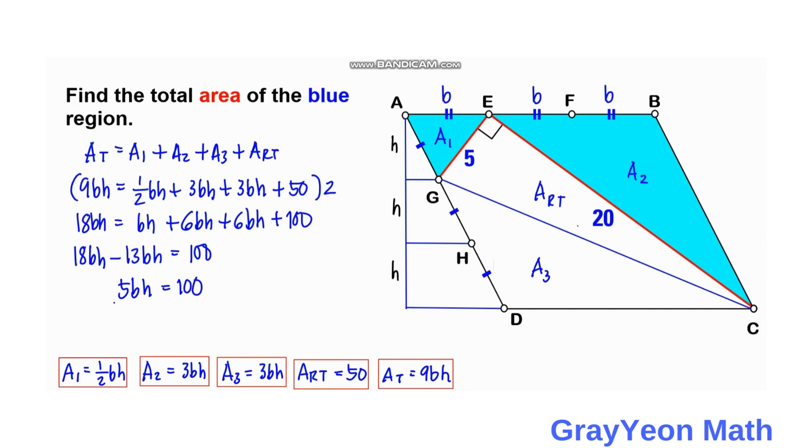And if we divide by 5 both sides, bh is equal to 20.